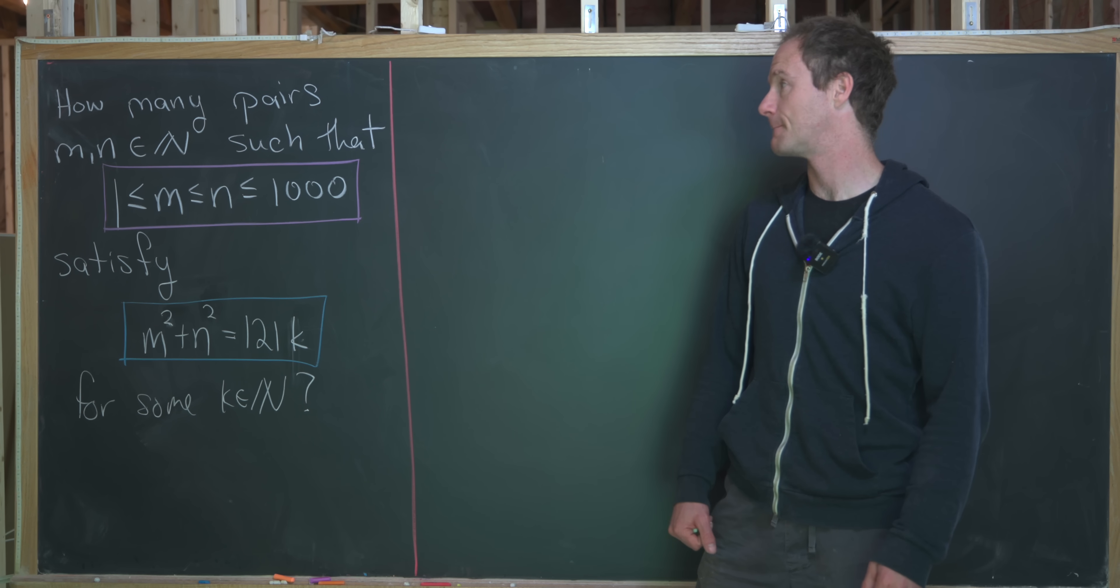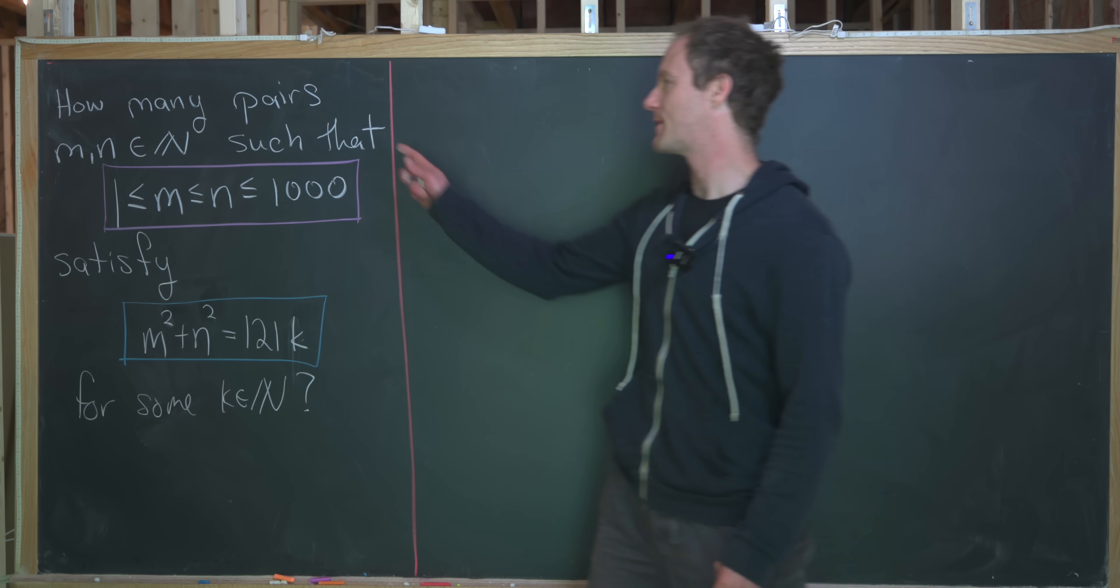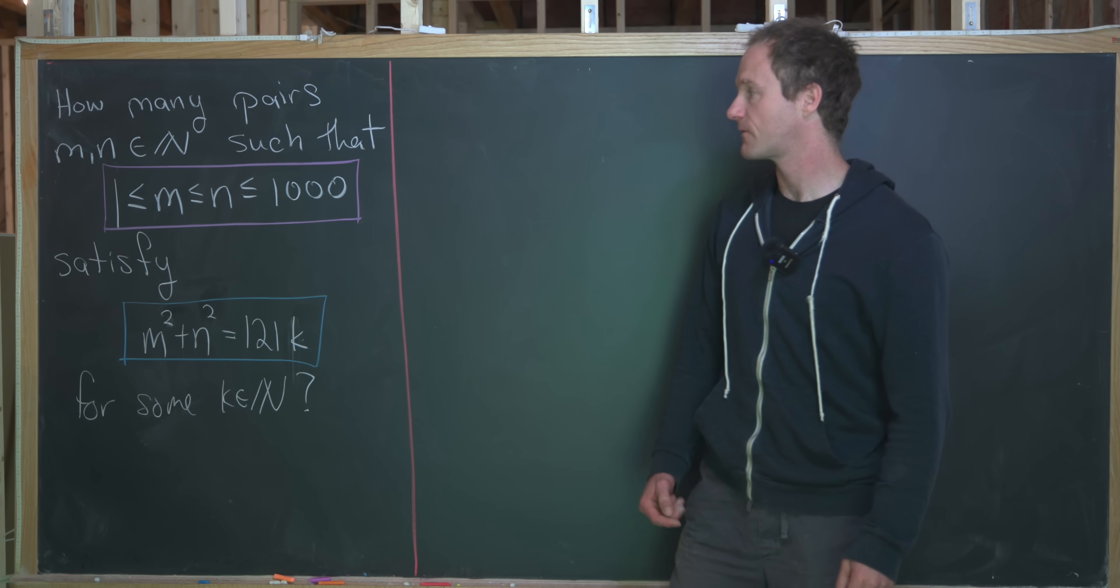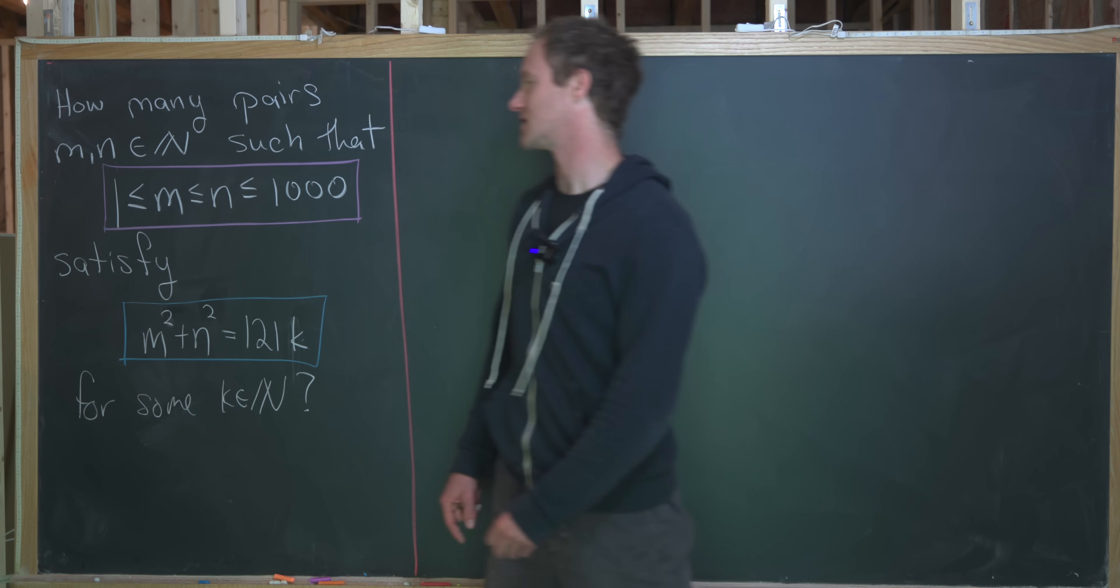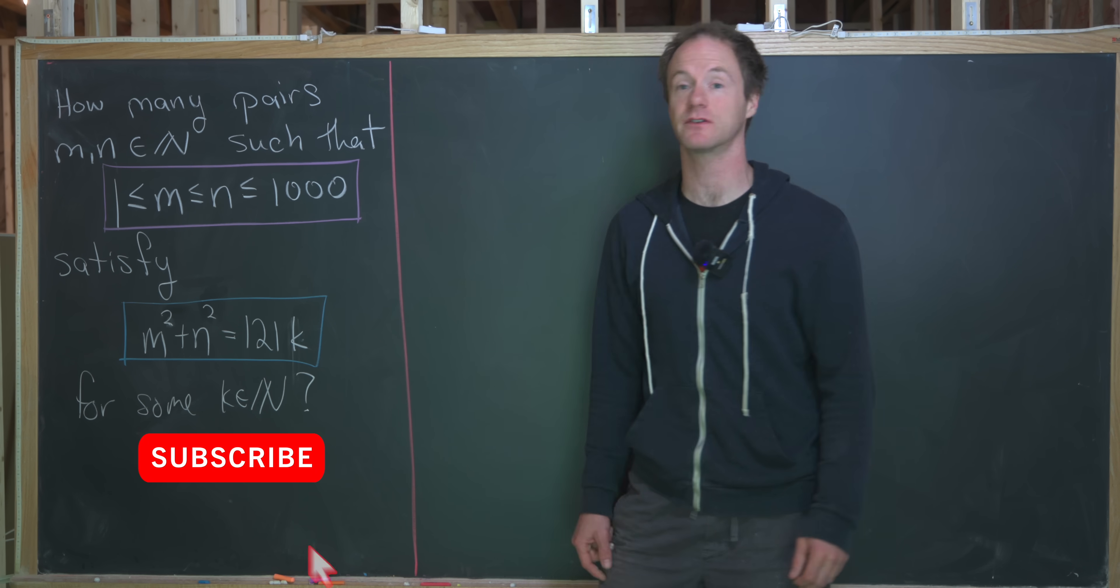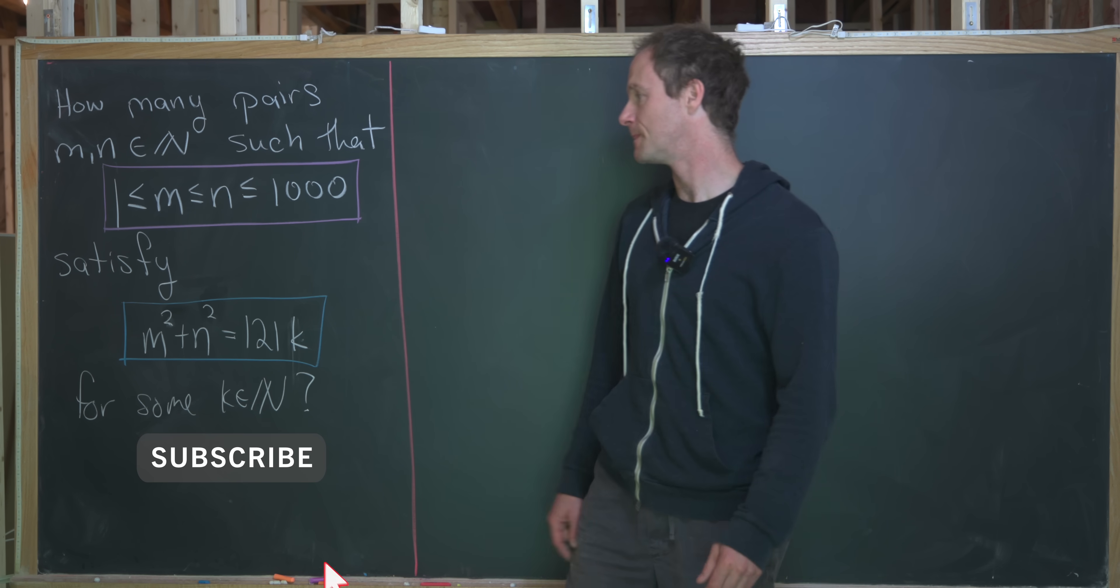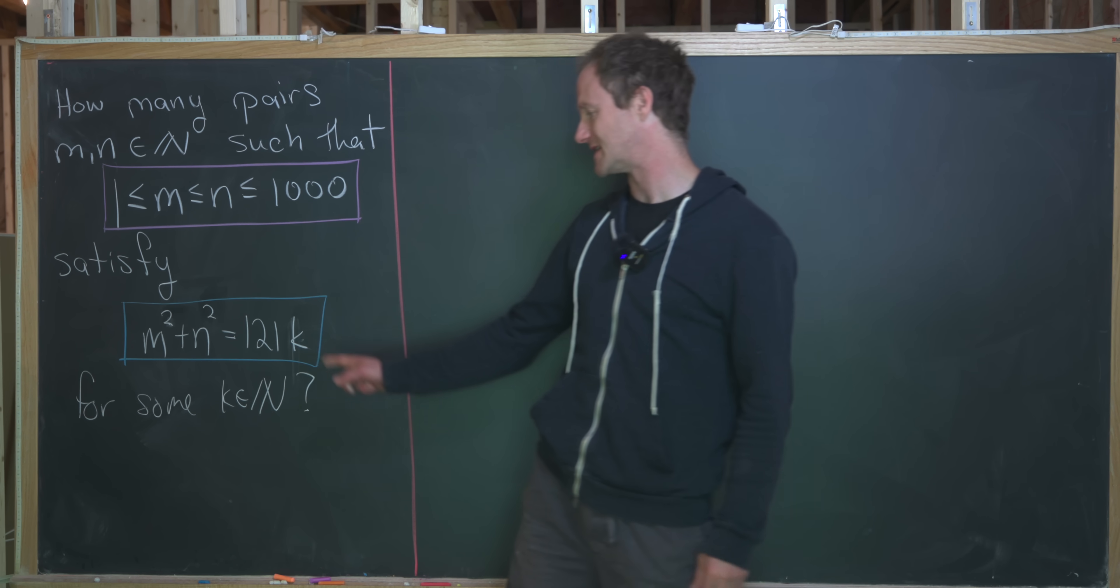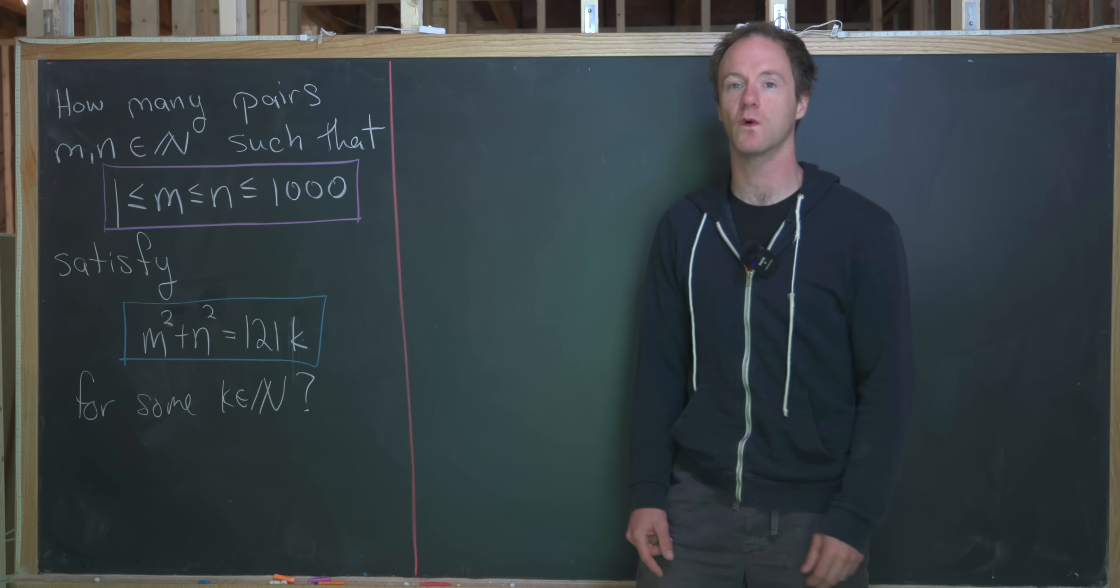I've got a nice little number theory problem today. So we want to count up how many pairs of natural numbers m and n satisfy two conditions. The first condition is 1 is less than or equal to m, which is less than or equal to n, which is less than or equal to 1,000.